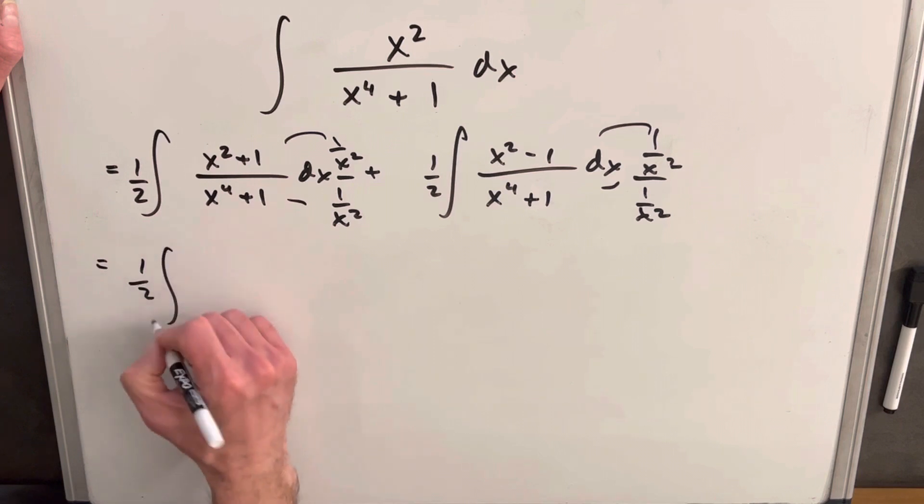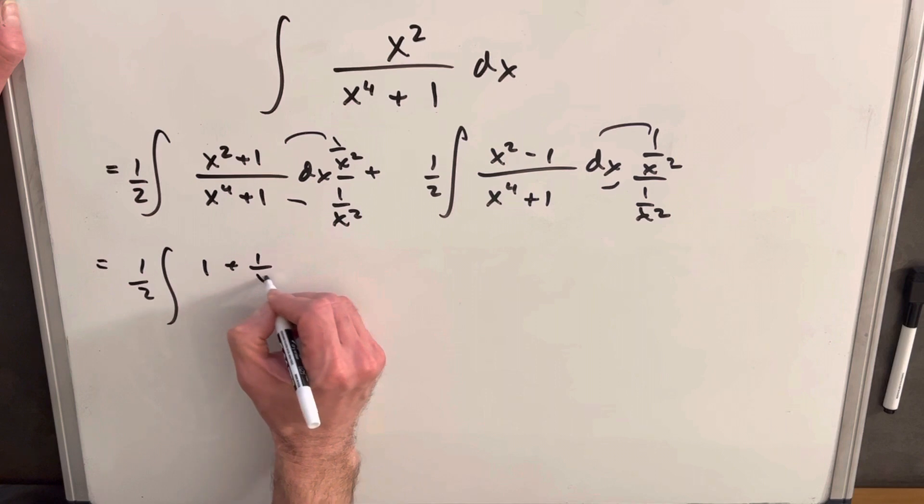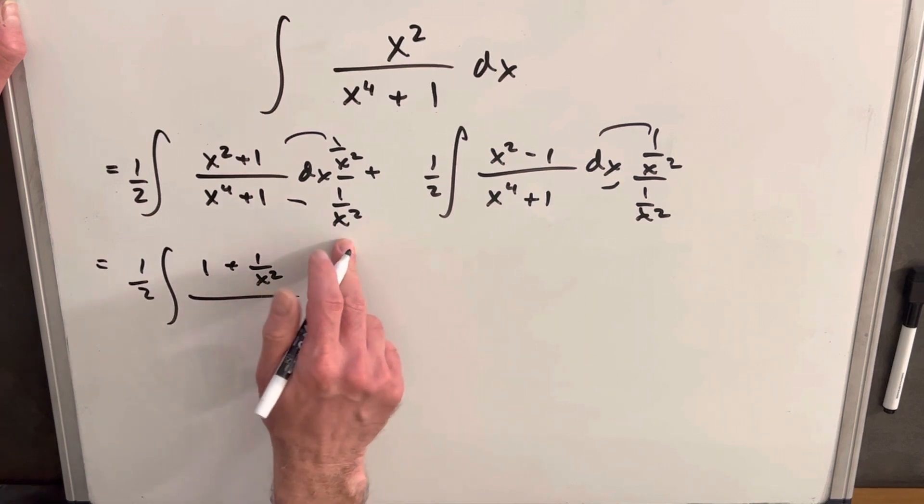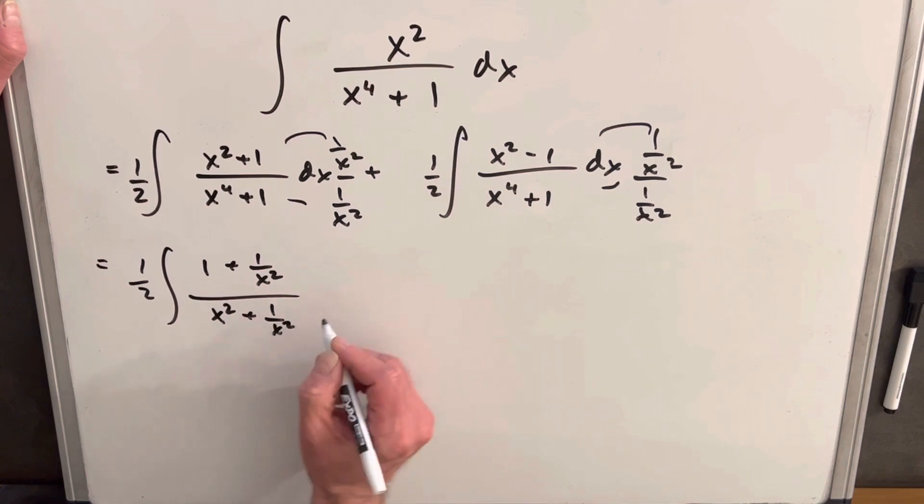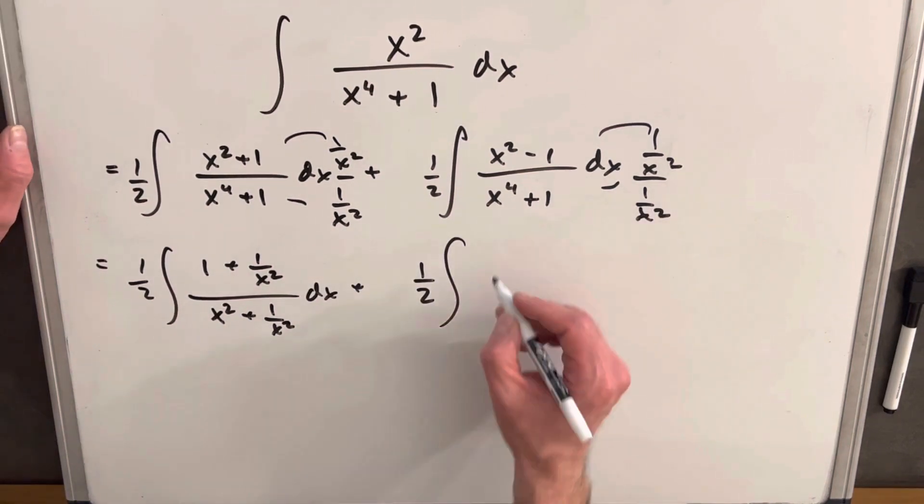We're going to have 1 half. x squared times 1 over x squared is just 1 plus 1 over x squared. And then multiplying this, we're going to have x squared plus 1 over x squared. Then we're going to do the same exact thing here on the right.